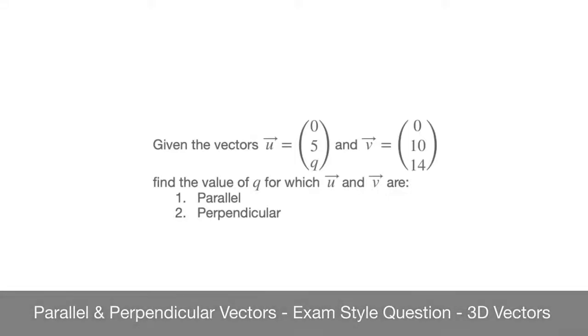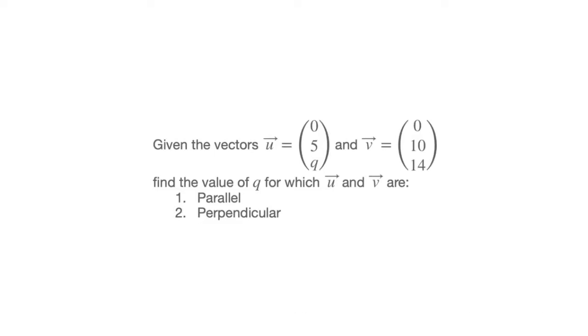We now work through an exam-style question involving parallel and perpendicular vectors. We're given the vectors u, whose components are 0, 5, q, as well as v, whose components are 0, 10, 14. We're then told to find the value of q, for which u and v are 1, parallel, and 2, perpendicular.